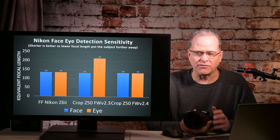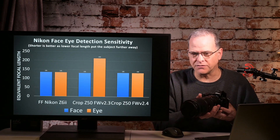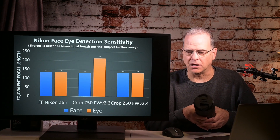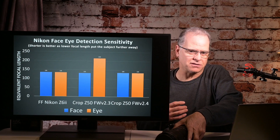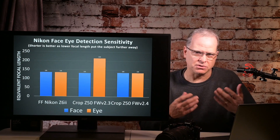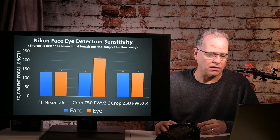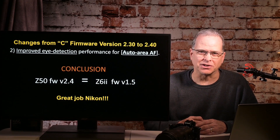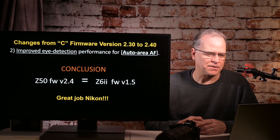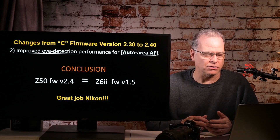I'm happy to announce the Z50 with version 2.4 firmware is effectively finding the face and the eyes at the same time, just like the Z6 II does. From everything I can tell, the new firmware on the Z50 makes it perform just as good as the Nikon Z6 II in terms of face and eye detection. They're equivalent — so great news. Great job Nikon.